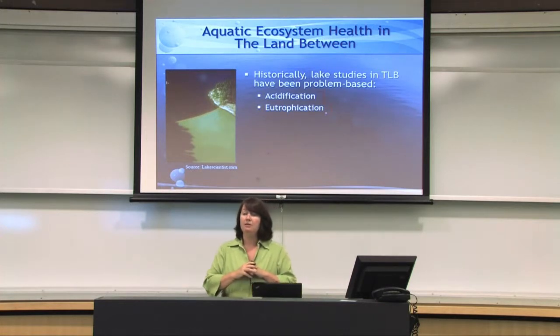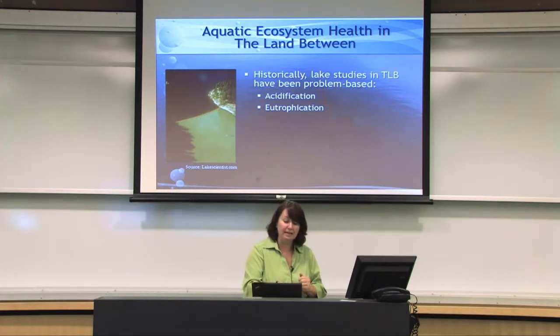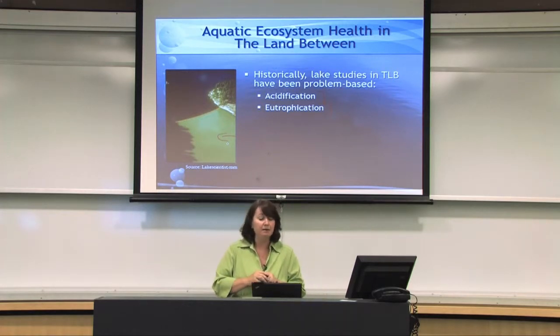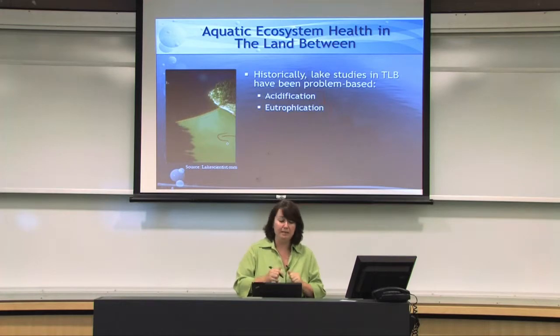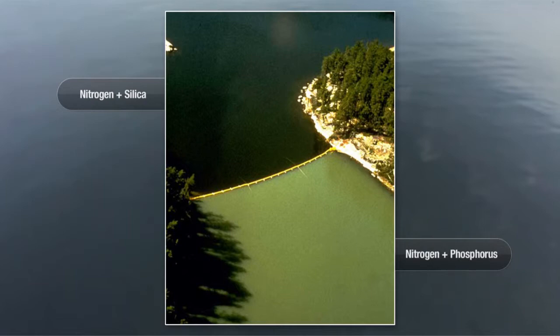Eutrophication — the excess of nutrients added to an aquatic system — is another concern. For those familiar with the Experimental Lakes Area, fundamental research has been done there. In a famous photo, a berm separates two basins of Lake 227: one received nitrogen and silica, the other nitrogen plus phosphorus. This demonstrated that in most Ontario lakes, the limiting nutrient is phosphorus. When too much phosphorus enters a lake, it becomes pea soup green with excessive algal growth, causing serious ecosystem health problems.